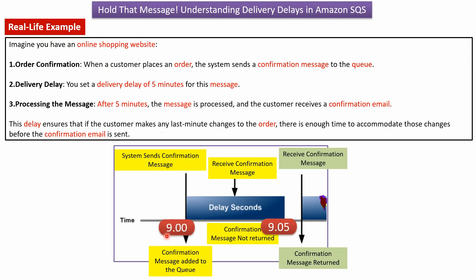For example, at 9 o'clock the system sends a confirmation message, and the confirmation message is added to the queue. Suppose the delivery delay is 5 minutes. So during those 5 minutes, if a request comes to receive the confirmation message, then the confirmation message won't be returned. After those 5 minutes, if a request comes to receive the confirmation message, then the confirmation message will be returned.